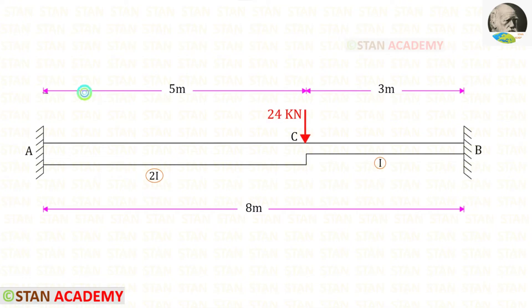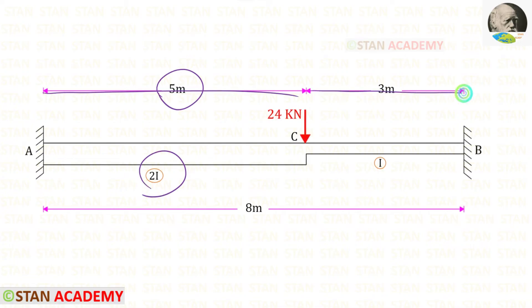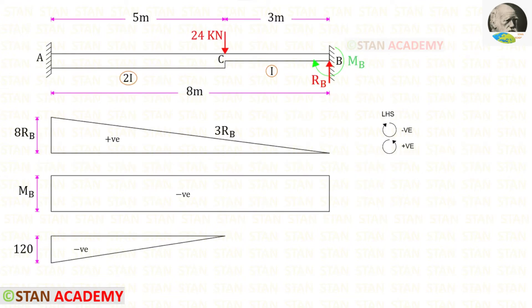For the left side, over 5 meters, the moment of inertia is 2I, and for the remaining distance of 3 meters, the moment of inertia is I. We are going to find the bending moment values separately about point A from point B and draw the diagrams. In this case we have to follow the left hand side rule: clockwise will be negative and anti-clockwise will be positive.